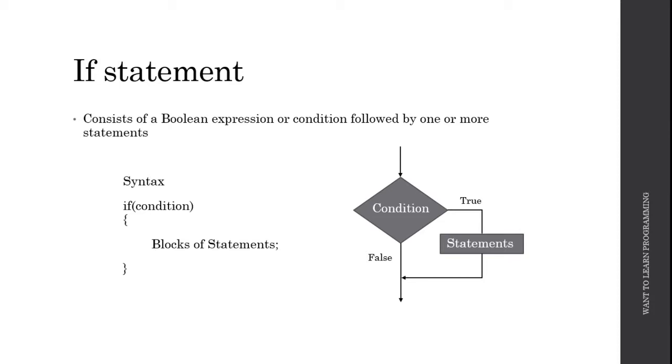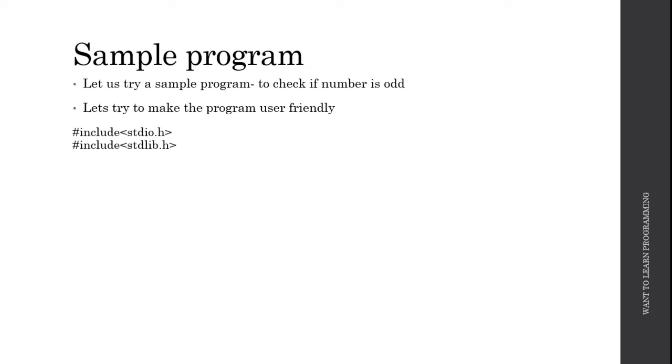This program is used to check if the number is odd. Let's try to make this program user friendly. The first statement that has to be put in any C program is the header files, so we will include stdio.h and stdlib.h. Next we call the int main function with curly braces.